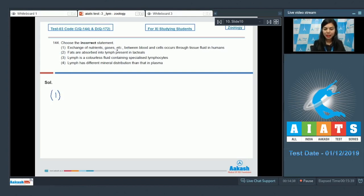Exchange of nutrients, gases, etc. between blood and cells occurs through tissue fluid in humans. This is correct students. For the exchange between blood and cells, this tissue fluid acts as the middleman. This is right. Option number 2: Fats are absorbed into lymph present in lacteals. That is also correct.